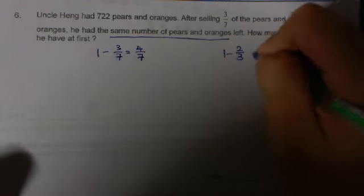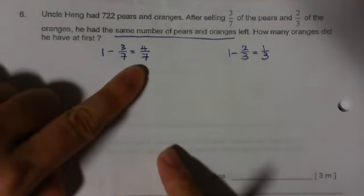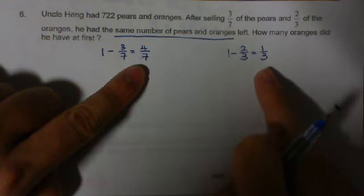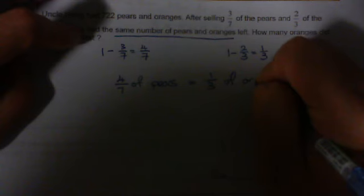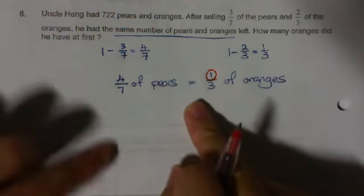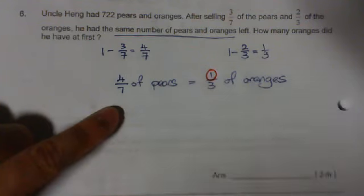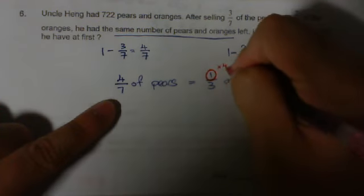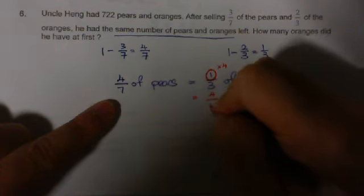Now, first, we know he has the same amount left. So, what does it mean? It means that he has 1 minus 3 over 7 pears left, which is 4 over 7. He has 1 minus 2/3, which is 1/3. So, 4 over 7 of the pears is equal to 1/3 of the oranges. So, 4/7 of pears is the same as 1 over 3 of oranges. We have learned that in class, we make the numerator the same because we are basically dividing the parts out. I'll show you in model shortly. So, this times 4, I get 4 over 12 of oranges.